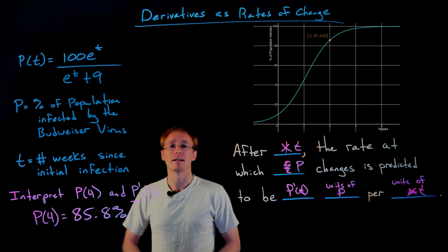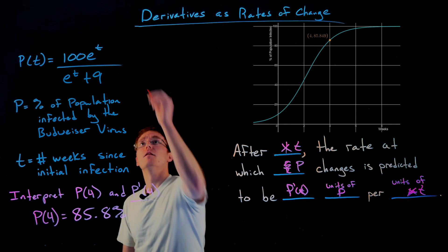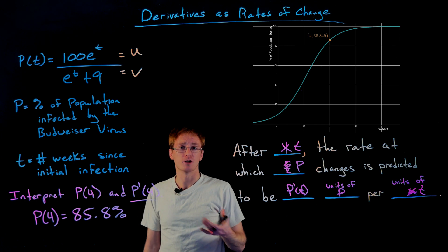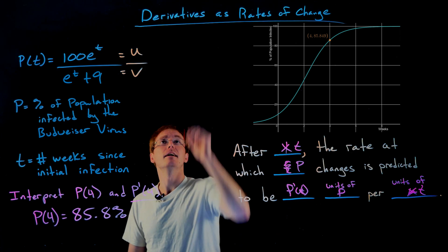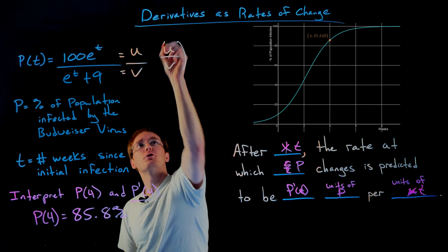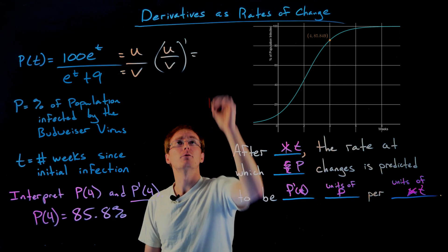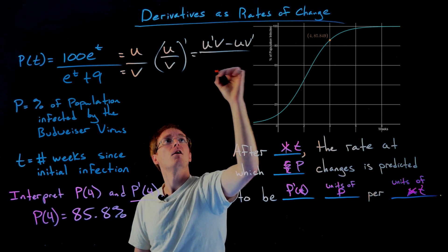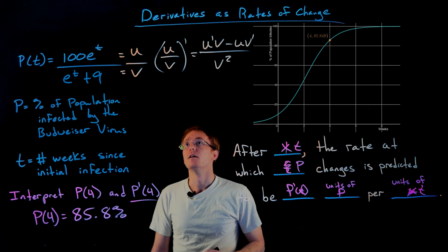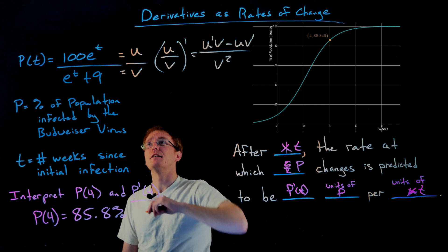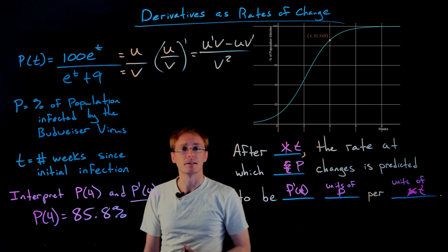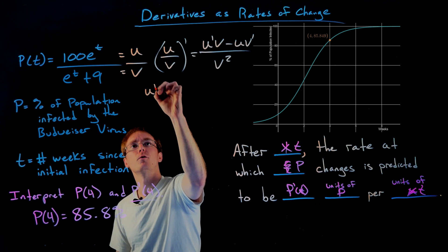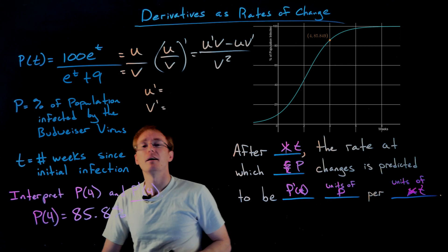To find p prime of 4 we need the derivative of our function, which we can find using the quotient rule. The quotient rule requires us to think of our function as the quotient of two functions u and v. The derivative of u over v equals the derivative of u times v, minus u times the derivative of v, all over v squared. Here u is our numerator 100 times e to the t, and v is our denominator e to the t plus 9.